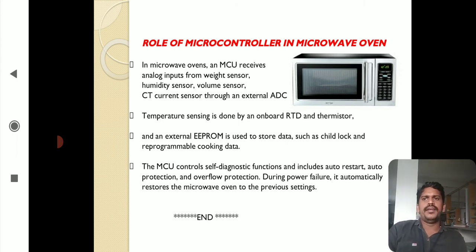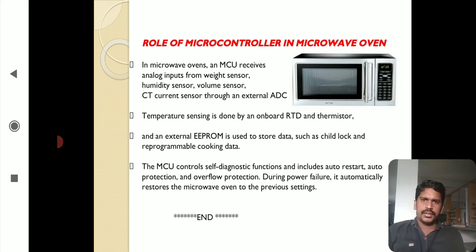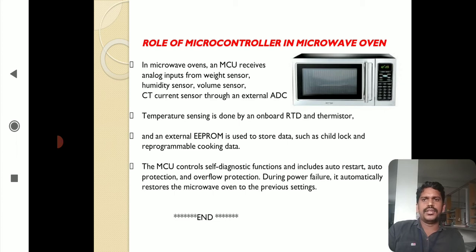The humidity sensor measures the humidity ratio relative to the food item. The volume sensor measures the volume of the food item. The CT current sensor works through the external ADC converter. These sensors work together to determine which type of food is placed in the cooking chamber. Temperature sensing is done by an onboard RTD and thermistors, which sense the temperature of the food item to determine how much heat is required.